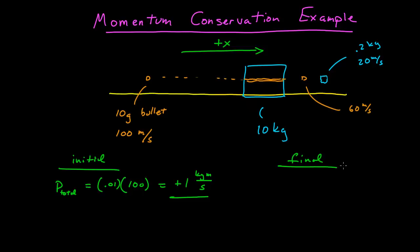After the bullet goes through, what sort of momentum do we have? Well we have the momentum of the bullet, and that's 0.01 mass times its velocity which is 60 and also in the positive x-direction, so that's plus 0.6.